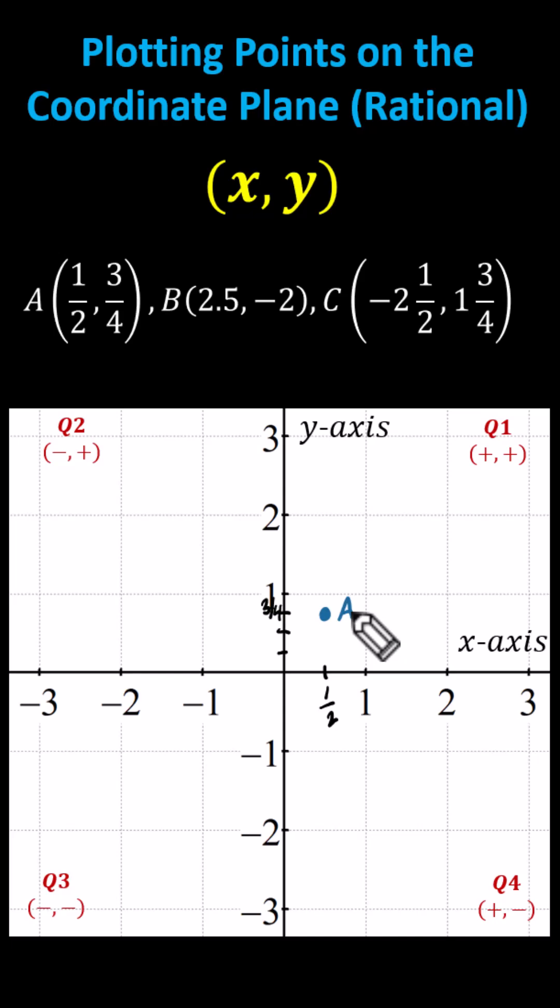Next, point B has coordinates two-point-five comma negative two. Let's locate two-point-five on the x-axis, which is right here between two and three.